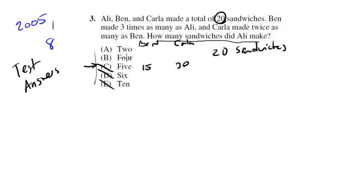Let's check out 4, so if Allie made 4, and Ben made 3 times that many, he made 12, and if Carla made double that, she made 24, again we're over 20.